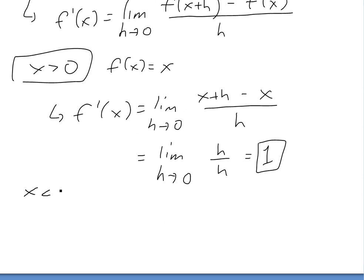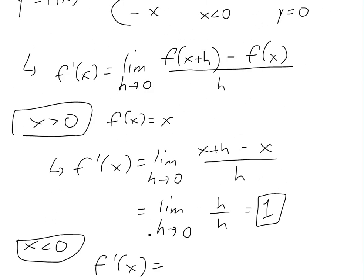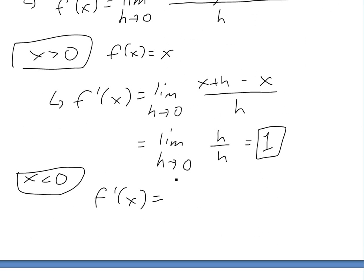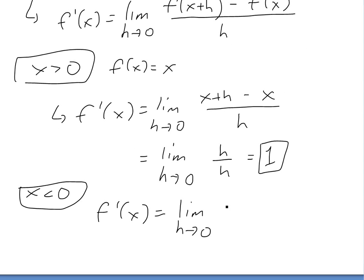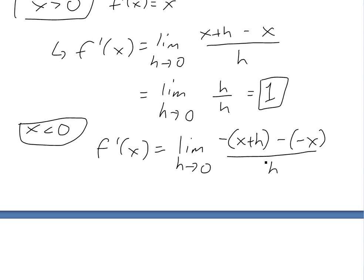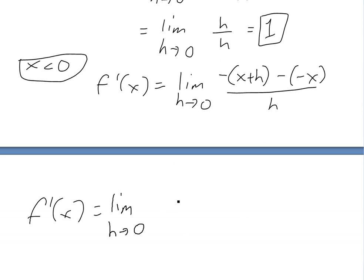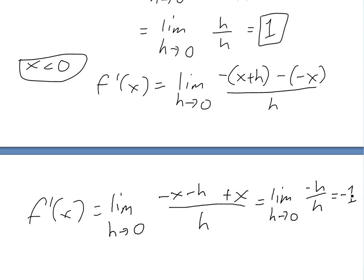Now when x is less than zero, f of x equals negative x. Writing the same derivative definition, we get the limit as h approaches zero of negative(x plus h) minus (negative x), all divided by h. Expanding that, we get negative x minus h plus x, all over h. The x's cancel and we're left with negative h over h, which equals negative one.